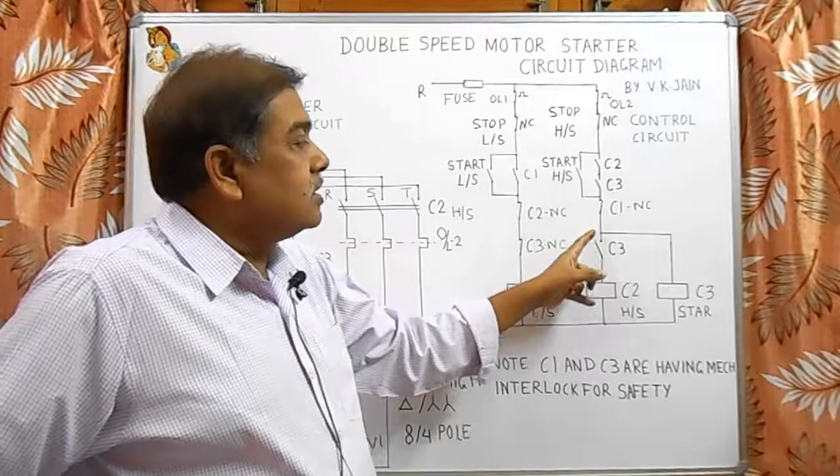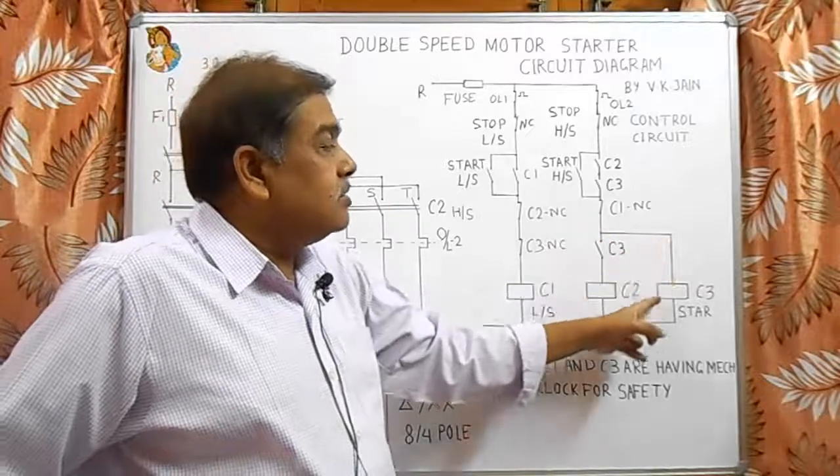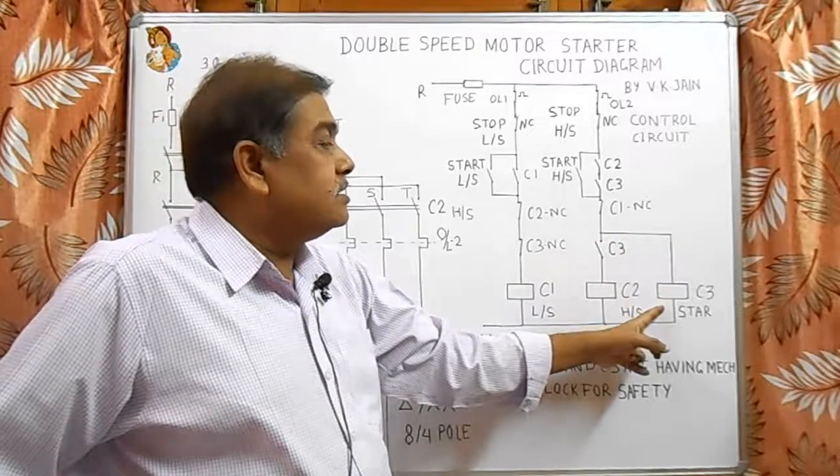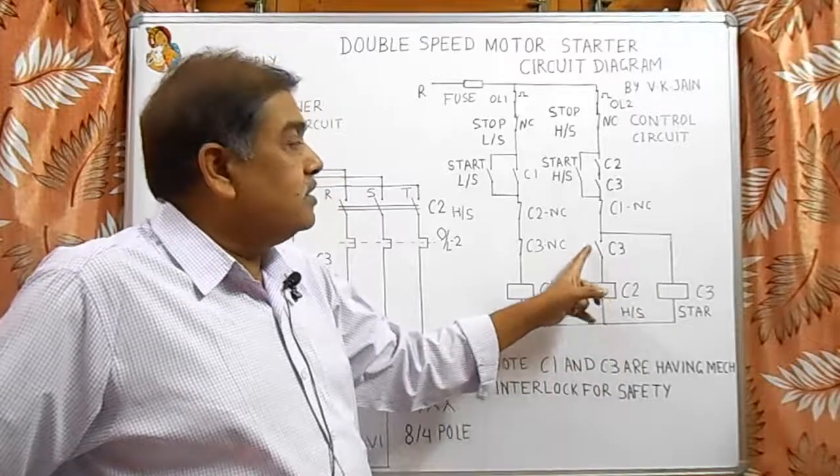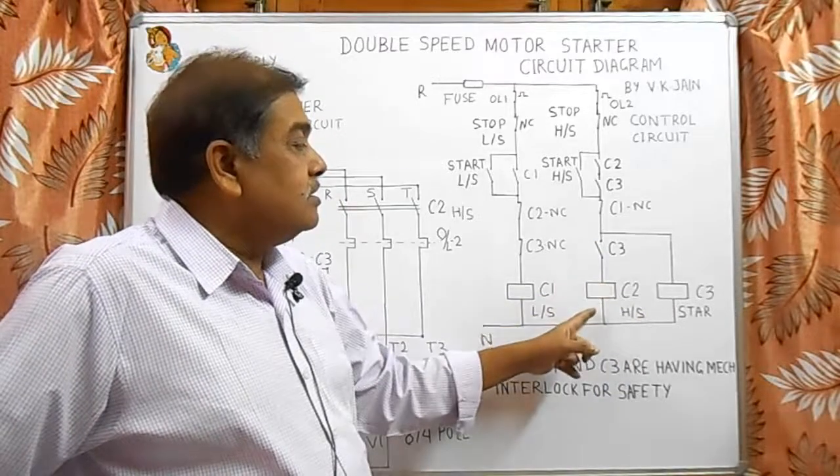as soon as we push this button, through the NC contactor, C1 contactor, supply goes to C3 contactor and C3 picks up. After the closing of this C3 contact, C2 also picks up.